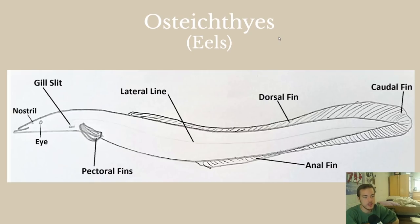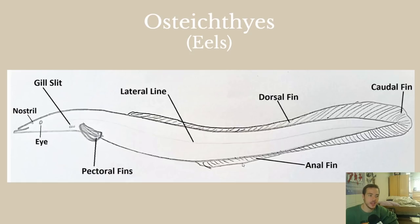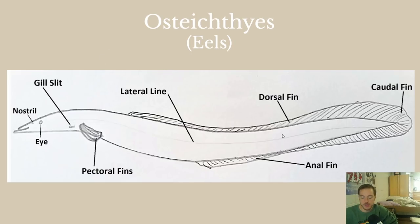Eels have a pretty simple external anatomy. You'll see the lateral line and small gill openings. The pectoral fin should be obvious. The dorsal, caudal, and anal fins are again all combined into one. Many people mistake this for one big tail fin, but it is three distinct structures that have grown together — they're indistinguishable at this point but are still separate structures.